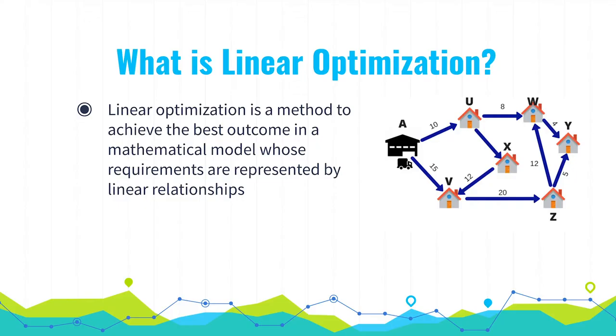So what is linear optimization? In short, linear optimization is a method to achieve the best outcome in a mathematical model whose requirements are represented by linear relationships.